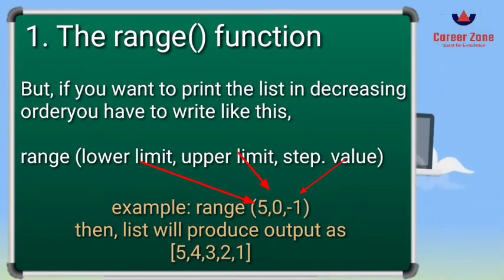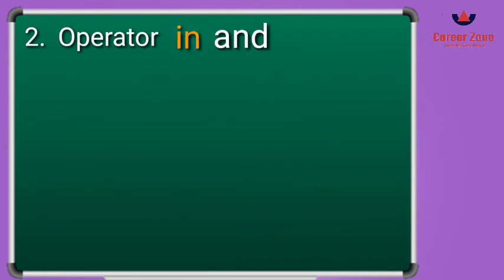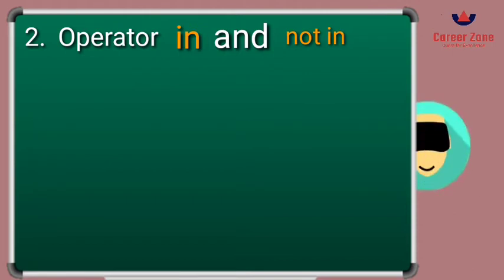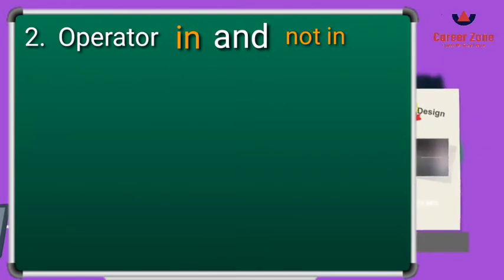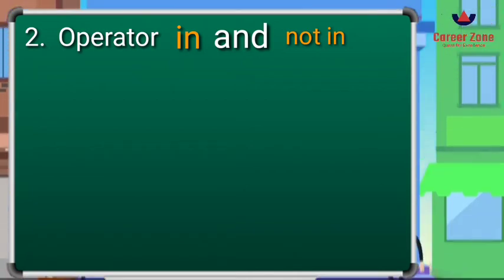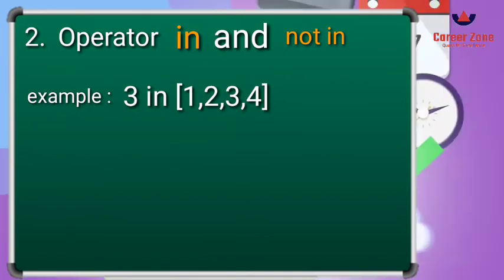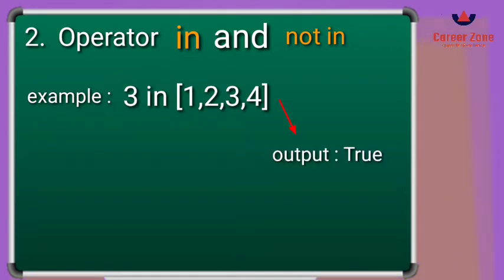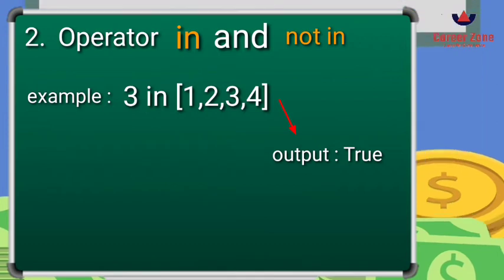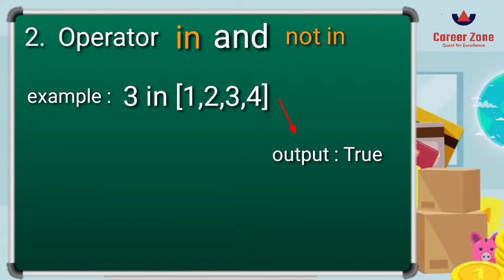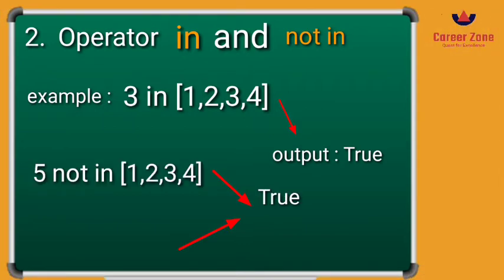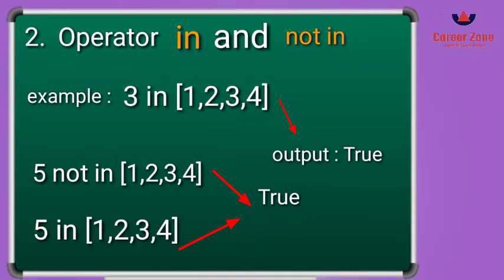The next topic is the in and not in operator. We already learned about these in the last video — they check whether a value is present in a list or not. For example, if I write '3 in [1, 2, 3, 4]', this expression will return True because the value 3 is contained in the given sequence. If I use the not in operator — for example, '5 not in [1, 2, 3, 4]' — it will return True, and using in instead would return False.